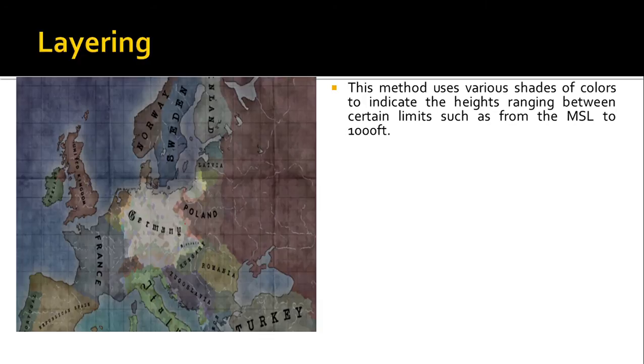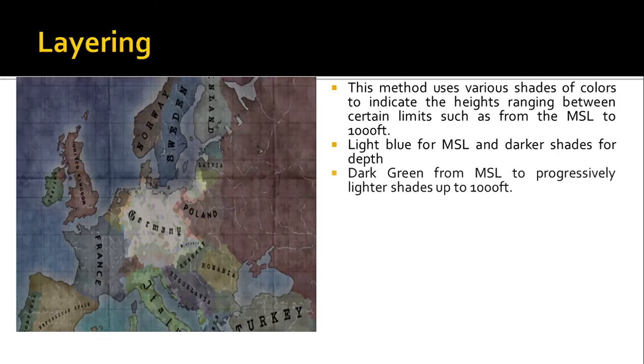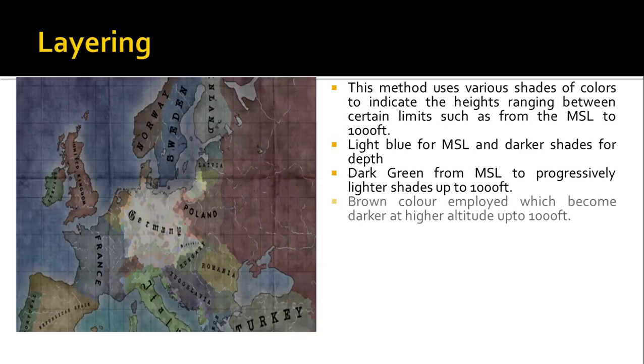Say for example, the mean sea level will be marked in light blue, and when there is a deep portion of the sea they will be using dark blue. The same way from the margin, that is the sea level towards the ground, they will be using green, followed by brown from thousand feet to two thousand feet, and then followed by purple.